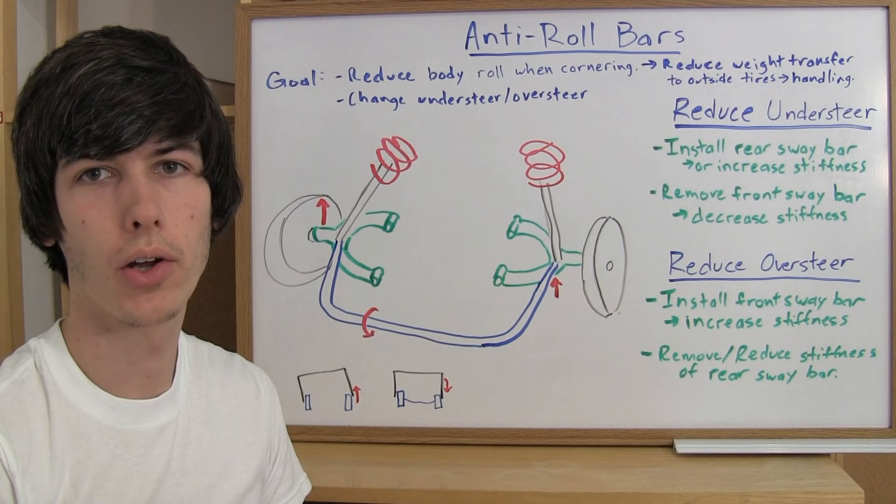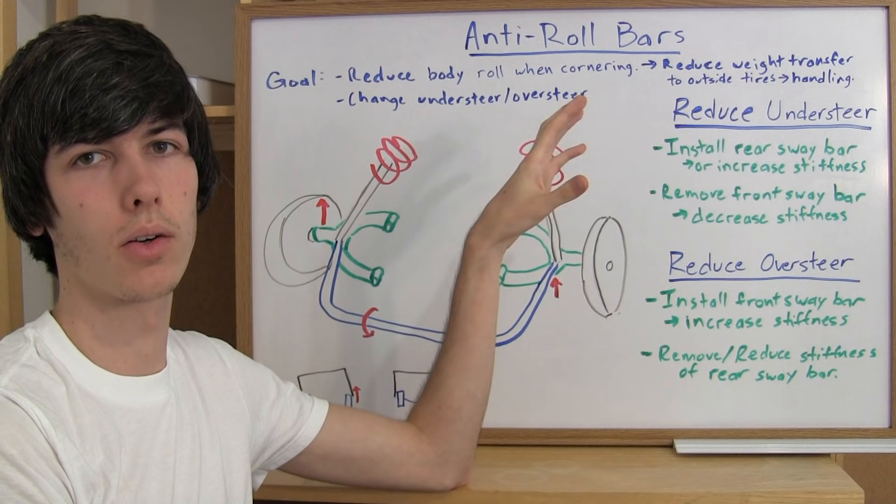Anti-roll bars are used to reduce body roll when cornering and also to change understeer or oversteer characteristics of your car.